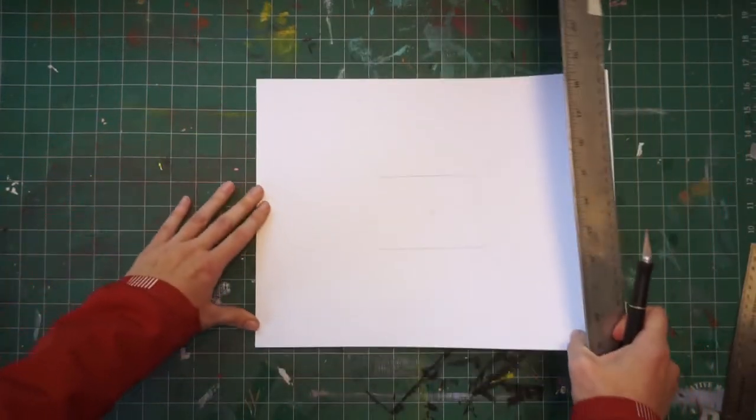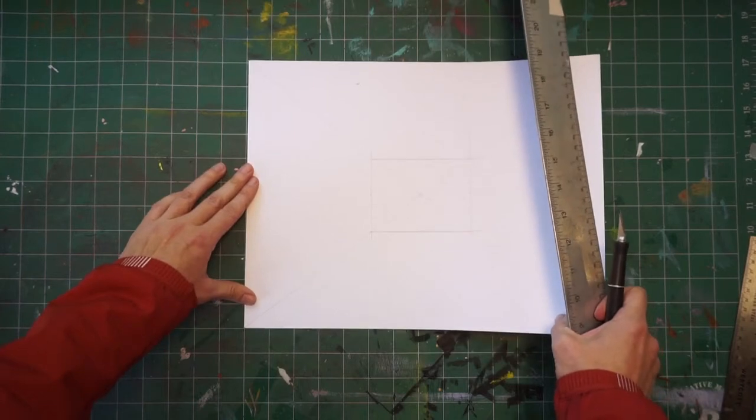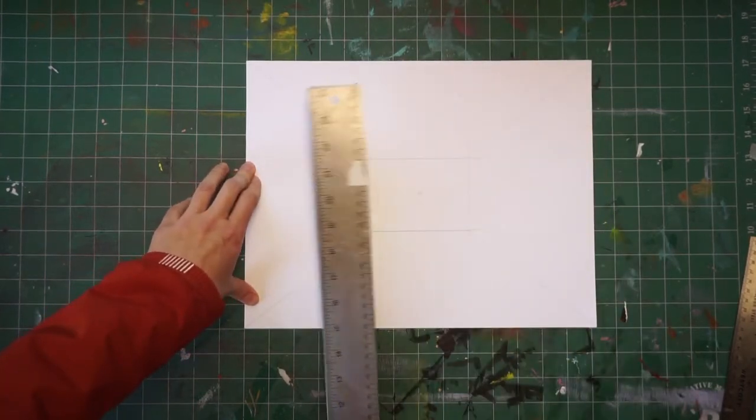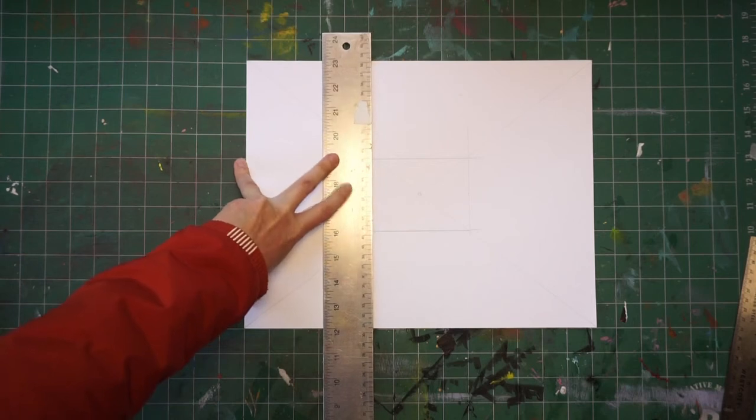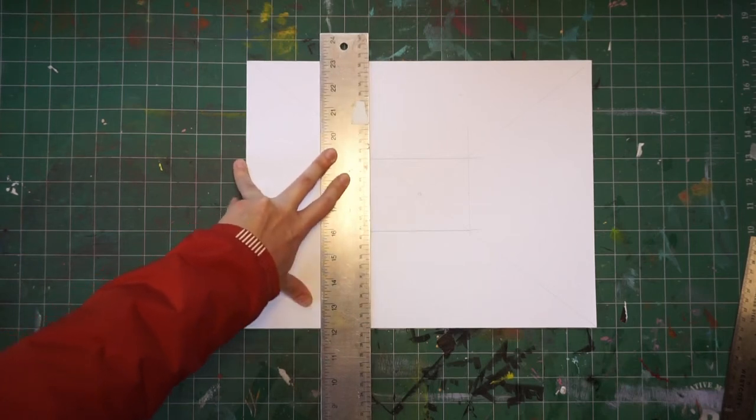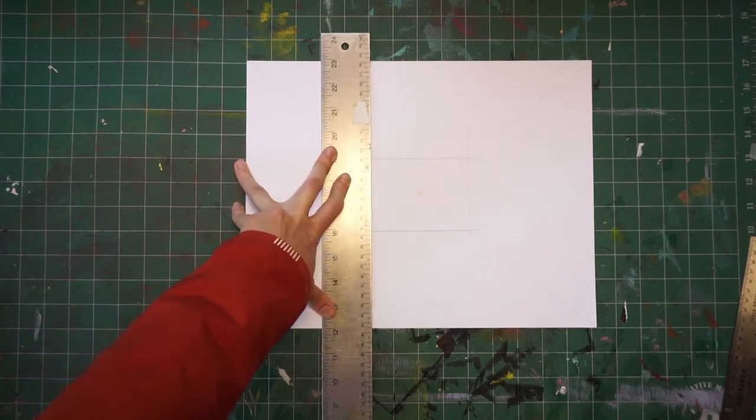I'm lining up the edge of my bristol to the grid of my cutting mat. The T-square is in full contact with the edge of the cutting mat. I have a true perpendicular.